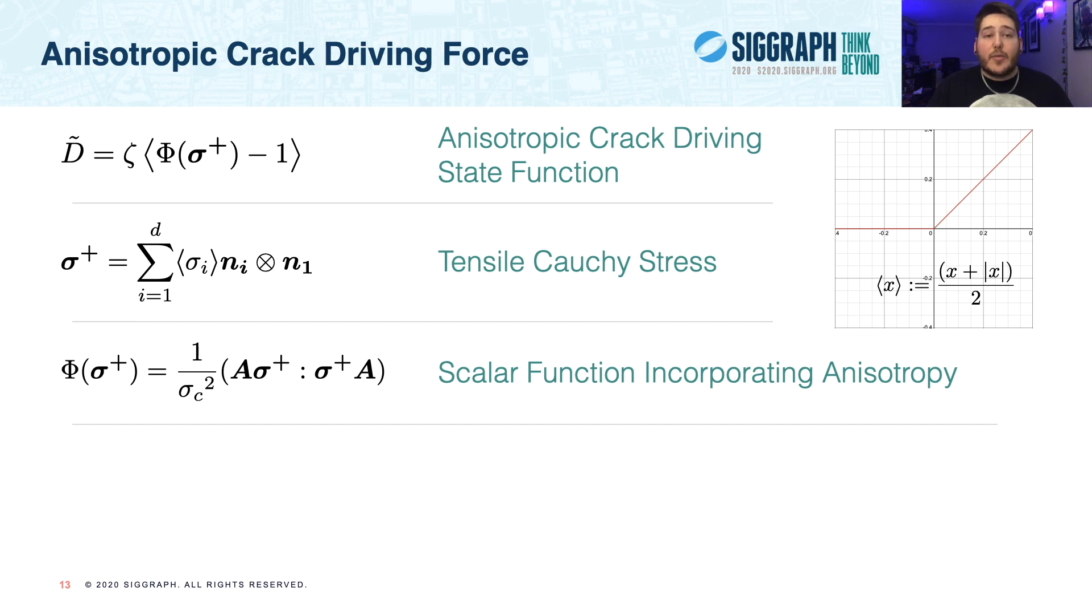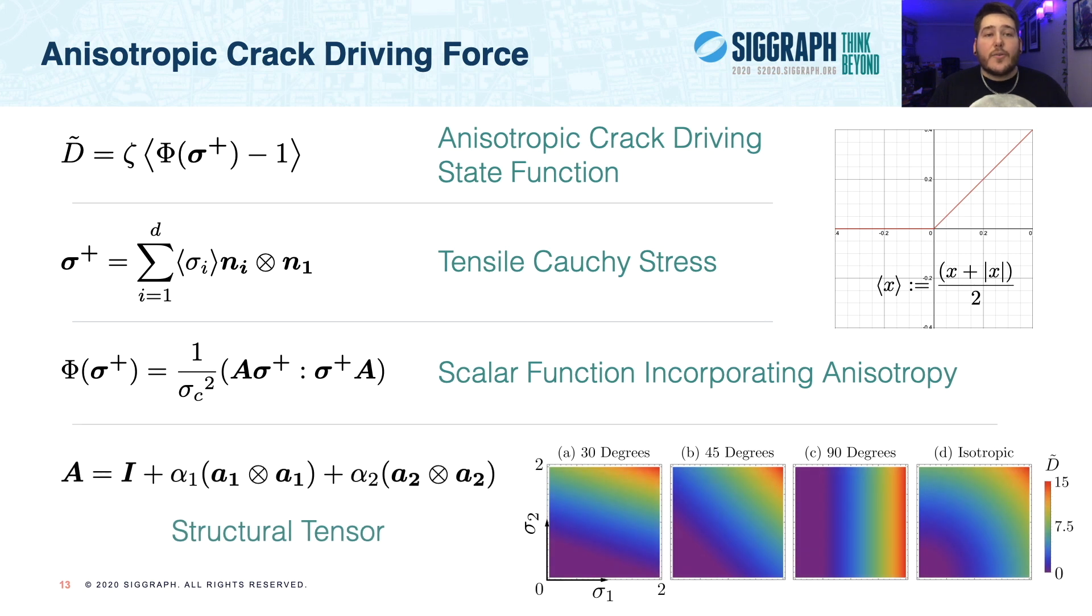And finally, sigma plus is the tensile portion of Cauchy's stress, and is computed using the Cauchy eigenvalues and eigenvectors, as you can see in the second row. Next, we define an expression phi as a function of the tensile stress, seen in the third row. We introduce here the notion of a critical stress, sigma c, that dictates how much stress a material can withstand before fracturing. And most important of all, in the fourth row, we show the second-order tensor A, which is a structural tensor that encodes the material's intrinsic fiber directions. Recall that A1 and A2 are the fiber directions, and we construct this tensor by adding contributions from each of these directions to the identity matrix, using the alpha parameters to weight these contributions. These alphas give us great control over the type of anisotropy.